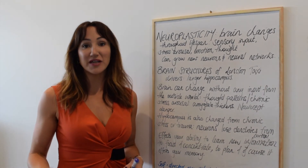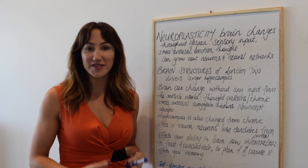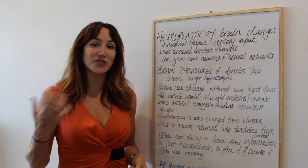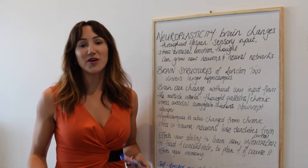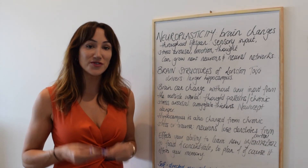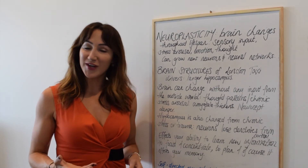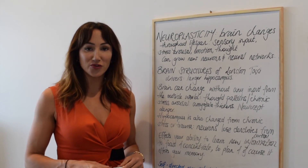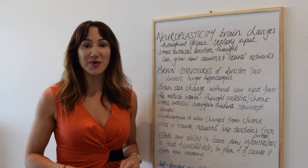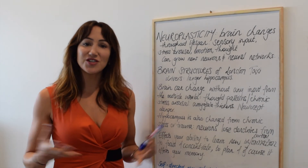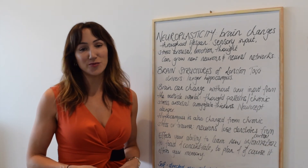This is why chronic stress and trauma can really affect your ability to flourish, thrive, and reach your potential — because your brain is not functioning at its best. This is why it can become really important to use self-directed neuroplasticity if you have a history of chronic stress or trauma, so that you can learn to integrate those areas better and really shift the brain so that you can function at your potential.